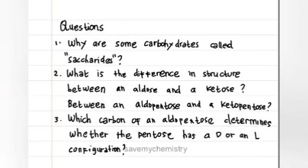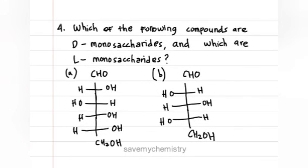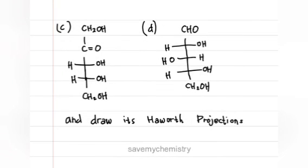Questions. Why are some carbohydrates called saccharides? Number 2, what is the difference in structure between an aldose and a ketose, between an aldopentose and a ketopentose? Which carbon of an aldopentose determines whether the aldopentose has a D or an L configuration?